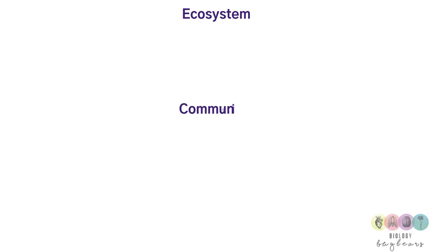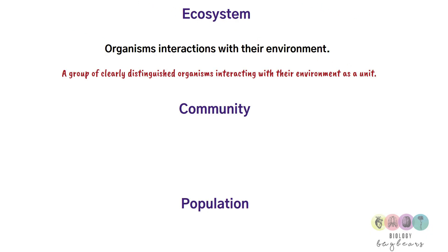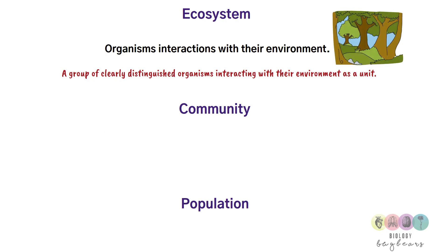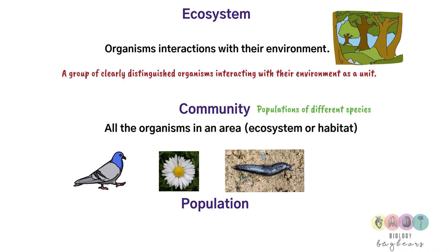When thinking about an ecosystem we think about communities and populations. The ecosystem is organisms' interactions with their environment — or a group of clearly distinguished organisms interacting with their environment as a unit in a particular place. A community is all the different organisms in the area, i.e. all the different populations or species.